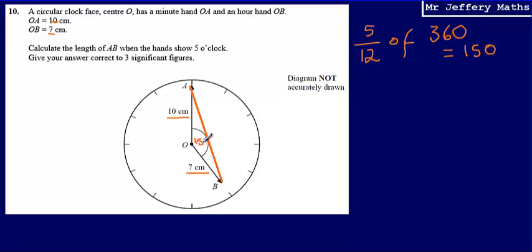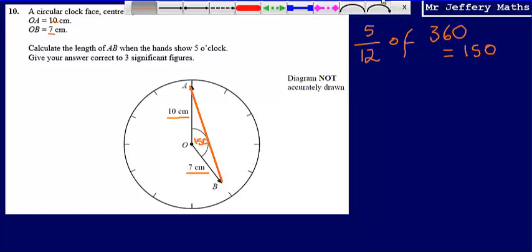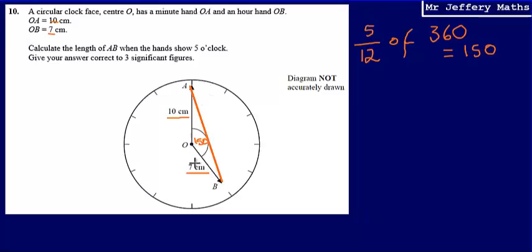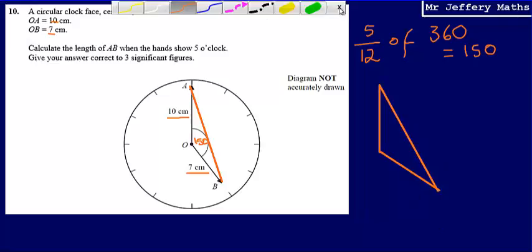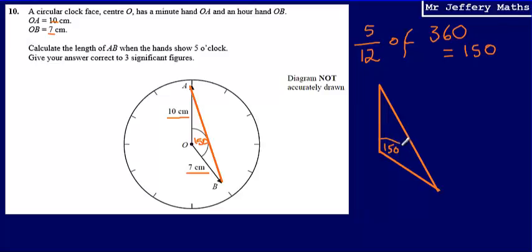So that angle there is 150. Now what I'm going to do just to make this a little bit clearer is I'm going to redraw this diagram. So we've got a length of 10 centimeters and a length of 7, and we've got an angle of 150. And then I'm going to do all of my workings over here. So I've got 150 as the angle, and then I know that this length here is 10, and that this length here is 7.